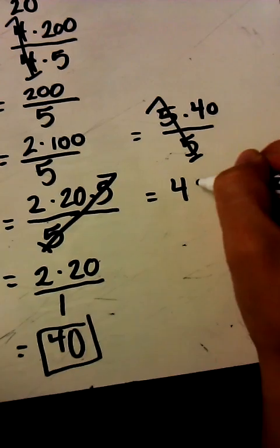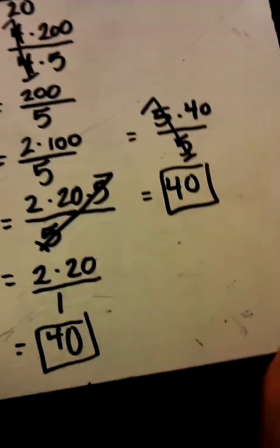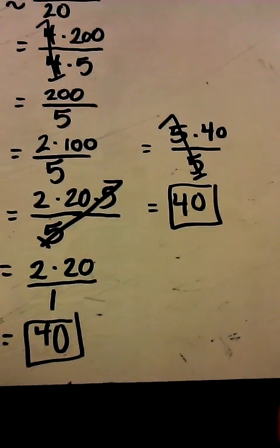40 times 1 is 40 and then over 1 just makes it 40. So there's different ways to decompose these numbers to get the same estimate in the end.